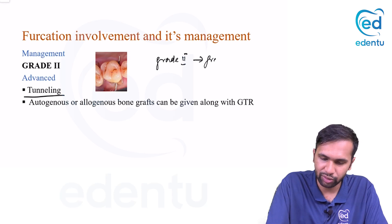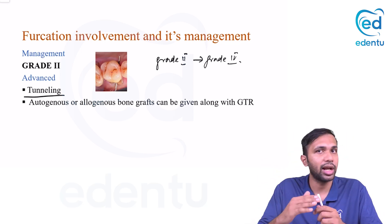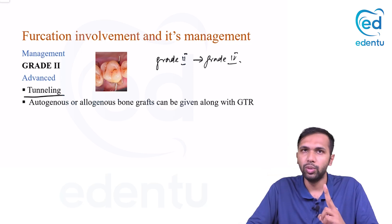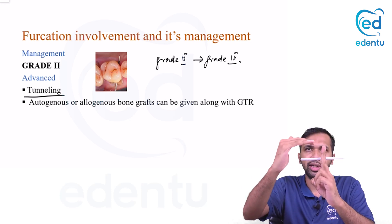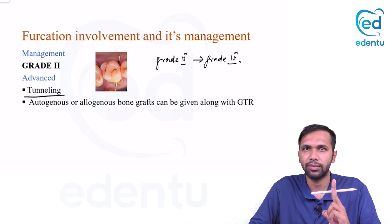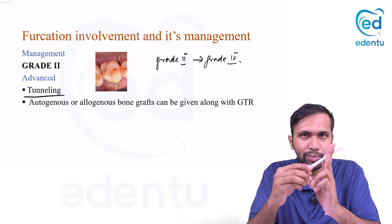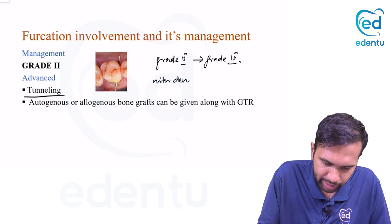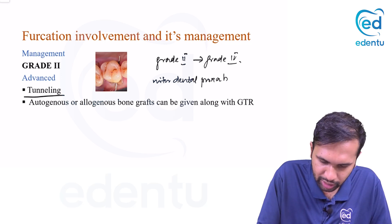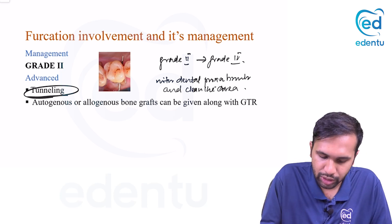More advanced grade two cases may require tunneling. In tunneling, you convert a grade two furcation into a grade four — you take a bur and remove whatever bone is obstructing the cul-de-sac, making it a through-and-through furcation, then reposition the gingival tissue apically so the patient can use an interdental proxabrush to keep the area clean.